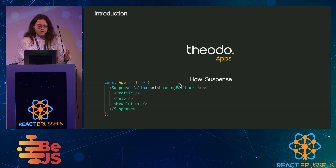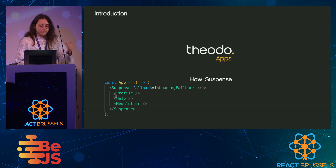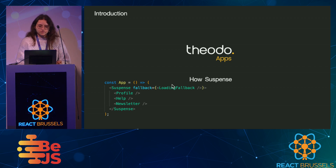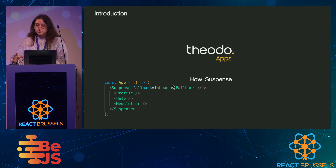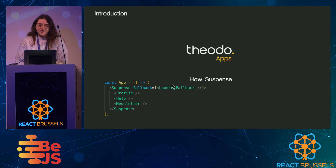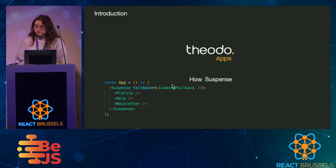How does suspense know a query is going to happen down there below and that it should display a fallback instead? Today, we are going to focus on this suspense component. This won't be a talk about concurrency — we are going to solely focus on this component. And as we learn more about it, we are going to learn more about React as well.